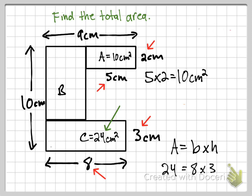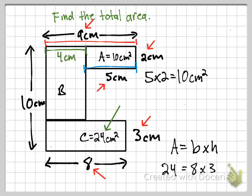Now for rectangle B — be careful here. The 10 centimeters and the 9 centimeters are not directly the height and base of B, but we can use them to find those values. The whole length is 9 centimeters, and the part below rectangle A measures 5, so the remaining base of B is 9 minus 5, which equals 4 centimeters.